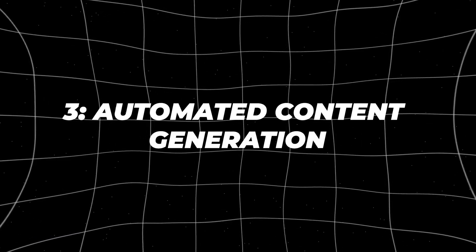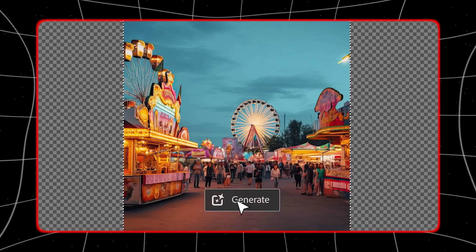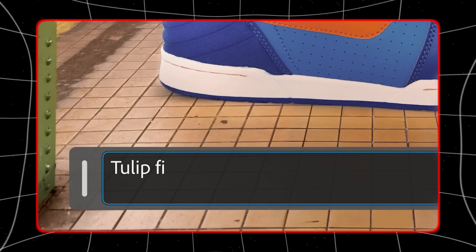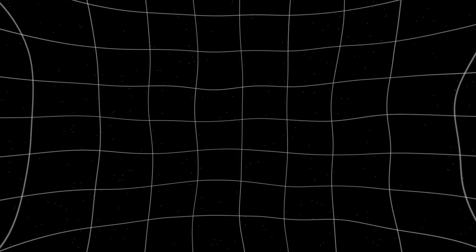Number 3. Automated Content Generation. In the context of automated content generation, there are several potential applications for quantum-enhanced generative AI. One example is in the field of journalism, where it could be used to generate news stories based on real-time data and information.